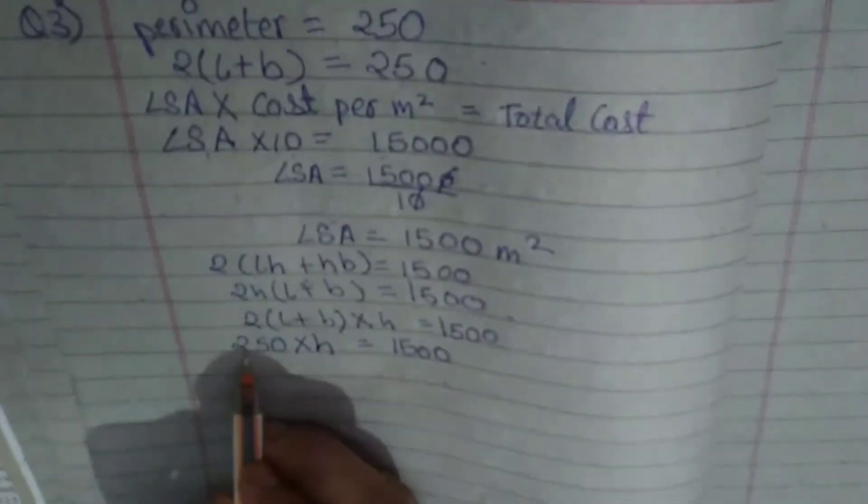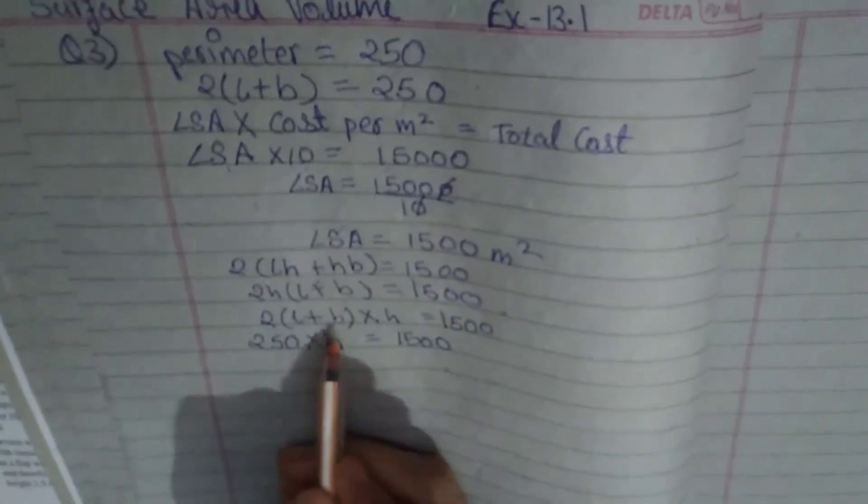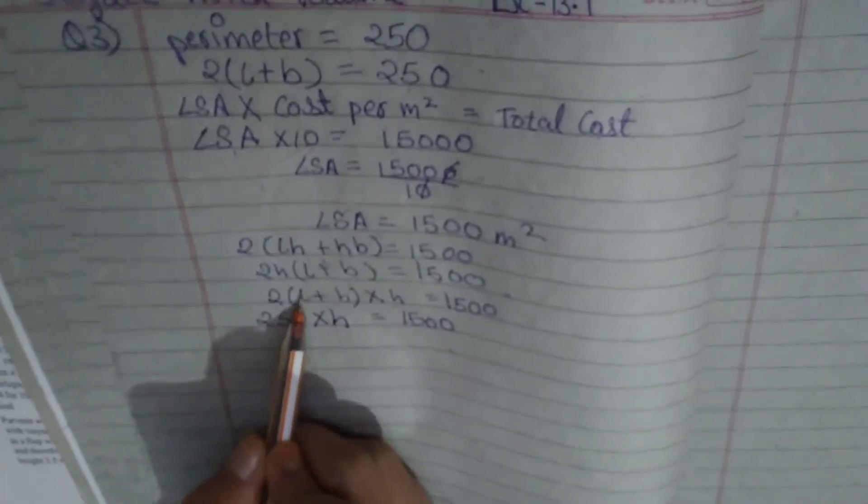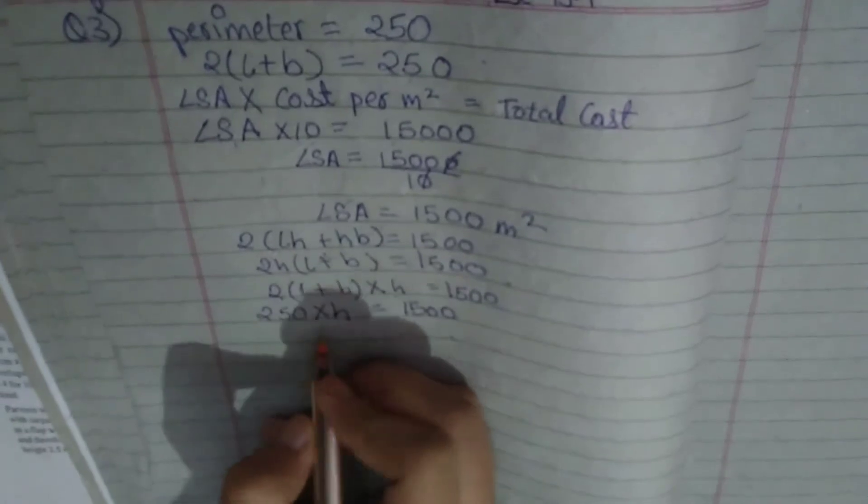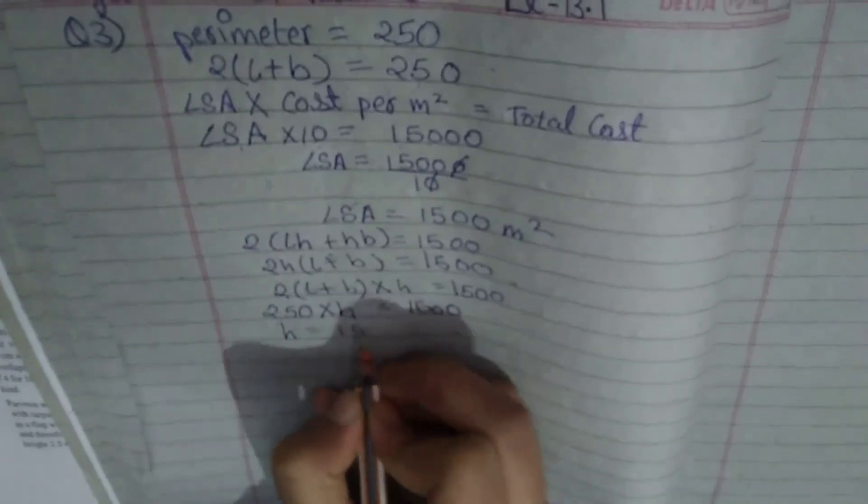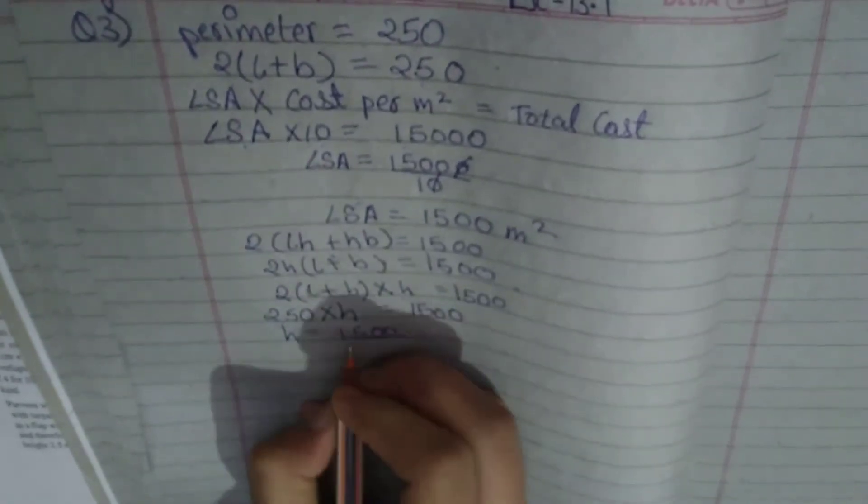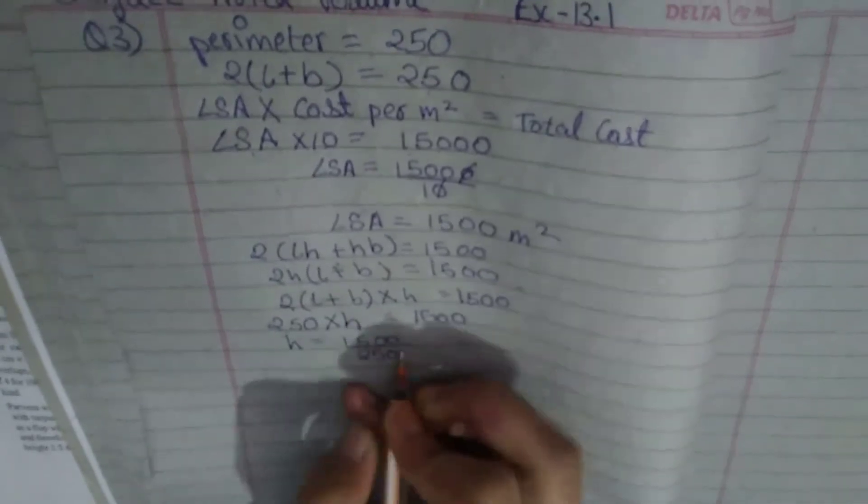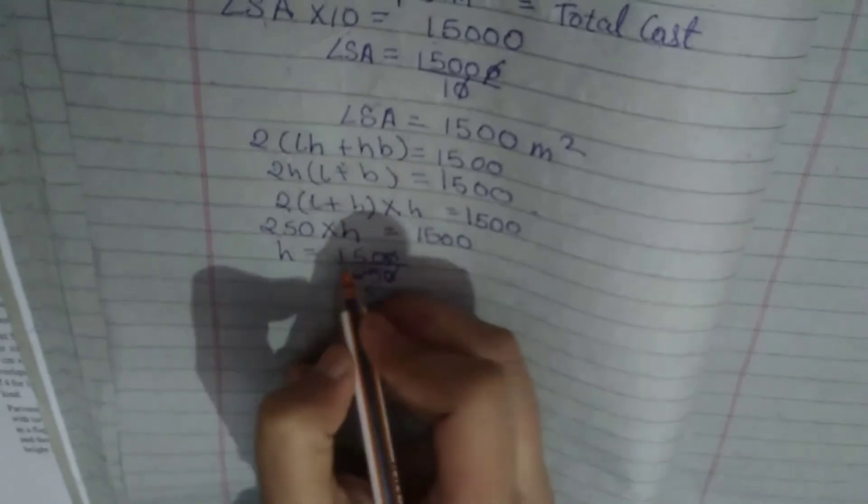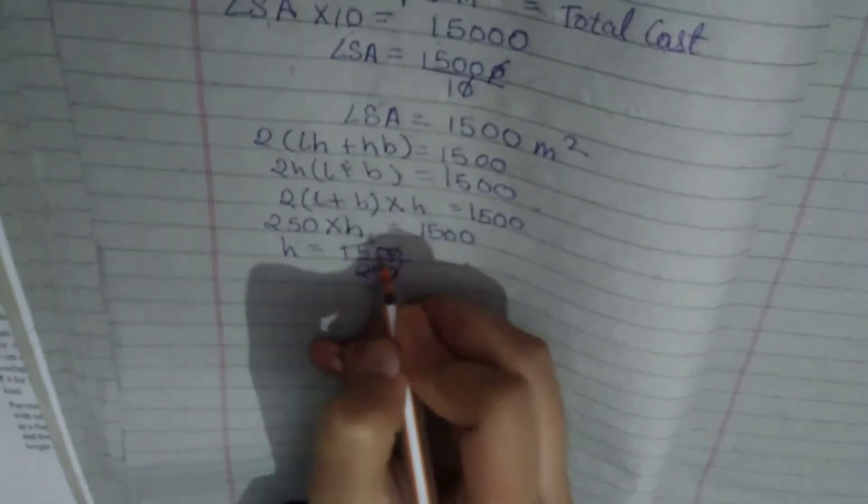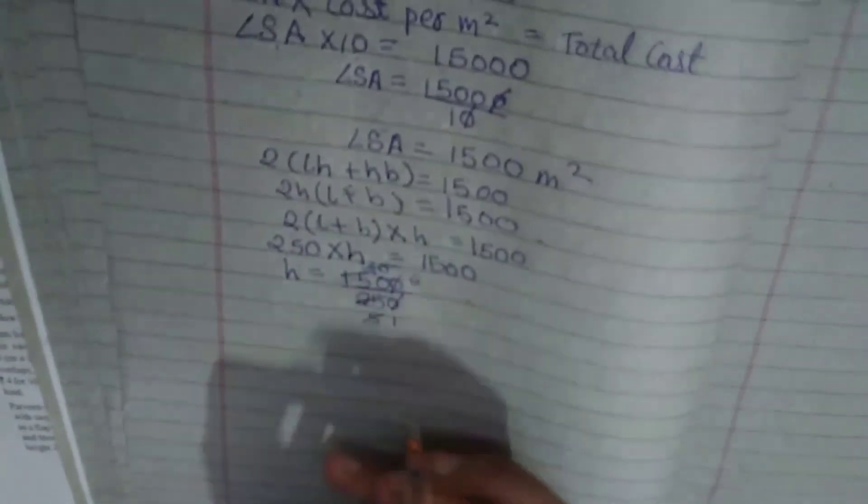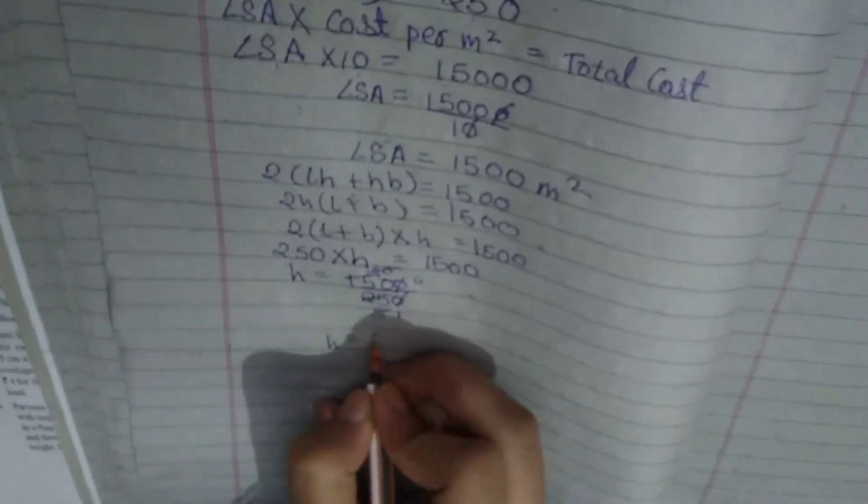We just need to find the height. H is equal to 1500 upon 250. 0, 0 cut, then 5 into 25, 5 into 15, 5 into 5, 6 into 30. So our height is 6.